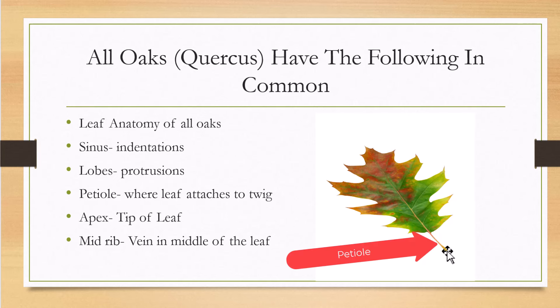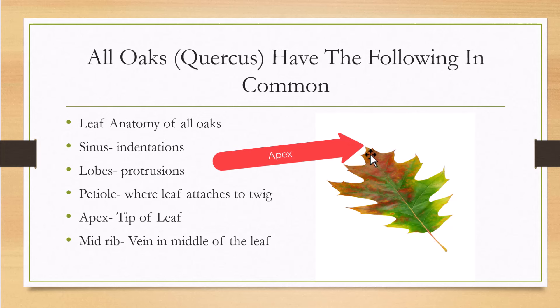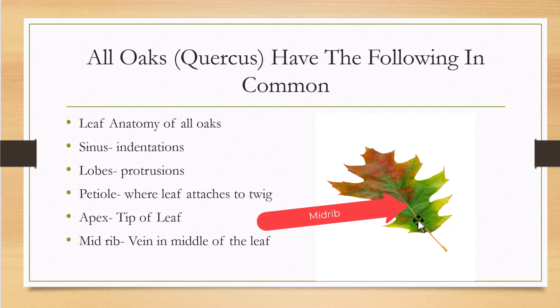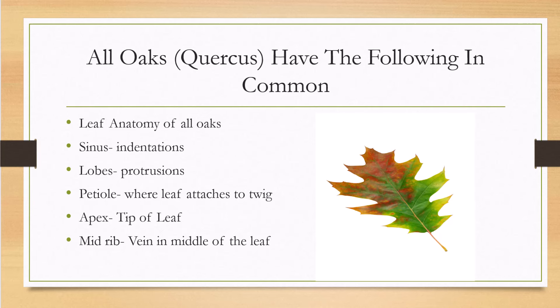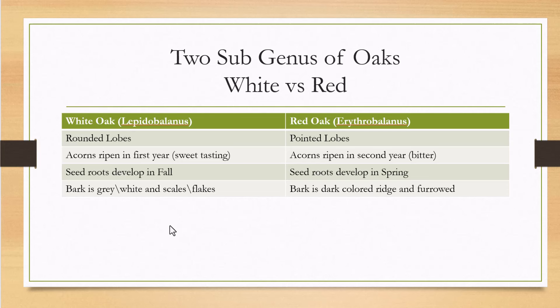The apex is the very top of the leaf, and the midrib is the dominant vein running straight down the middle of the leaf blade from the petiole upward. We can divide oaks into two groups: the white oaks, known as Lepidrobalanus, and the red oaks, known as Erythrobalanus. These are general rules with some exceptions — think of it like math rules that occasionally have an exception.